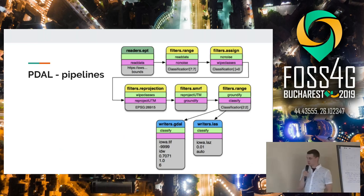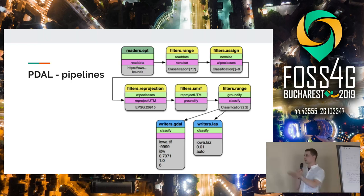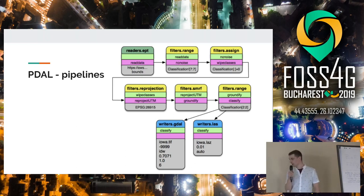But pipelines can also get quite complex. Because these stages are composable, you can develop some pretty complex workflows. For example, we're doing some reading from an EPT data source, which I'll go over shortly. We do some reprojection, denoising, and what we end up with is just the ground points from this dataset, and we write the output to both a TIFF and a LAZ file.